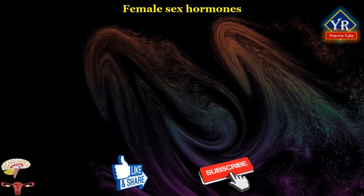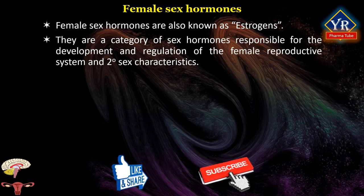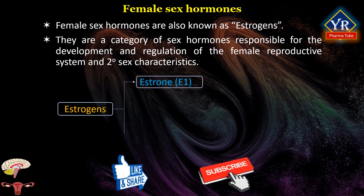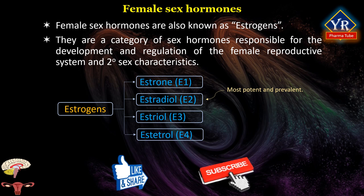Female sex hormones are also known as estrogens. Estrogens are a category of sex hormones responsible for the development and regulation of the female reproductive system and secondary sex characteristics. There are three major endogenous estrogens that have estrogenic hormonal activity: estrone (E1), estradiol (E2), and estriol (E3). Another estrogen called estetrol (E4) is produced only during pregnancy.